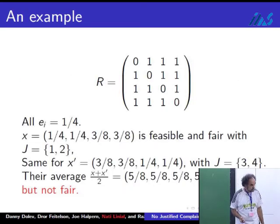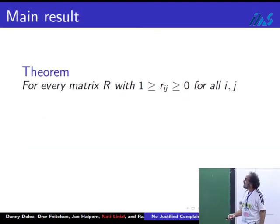For that solution, why is this fair? Because it exhausts resources one and two. Twice three-eighths plus a quarter is one.